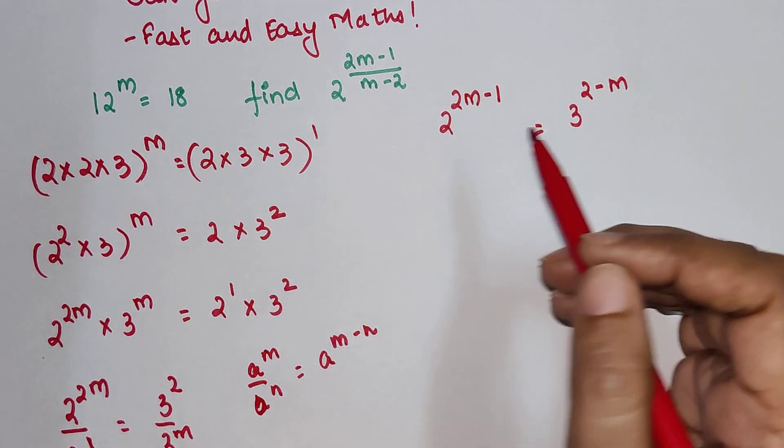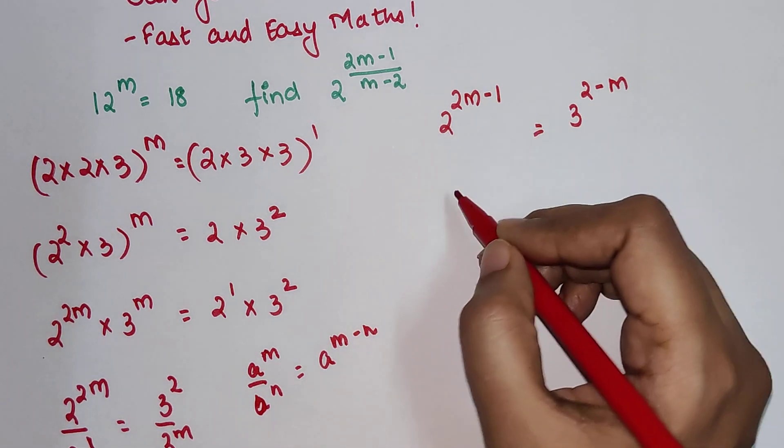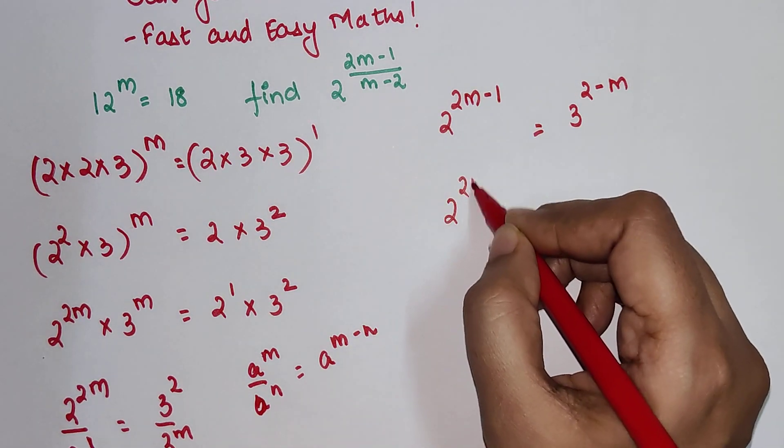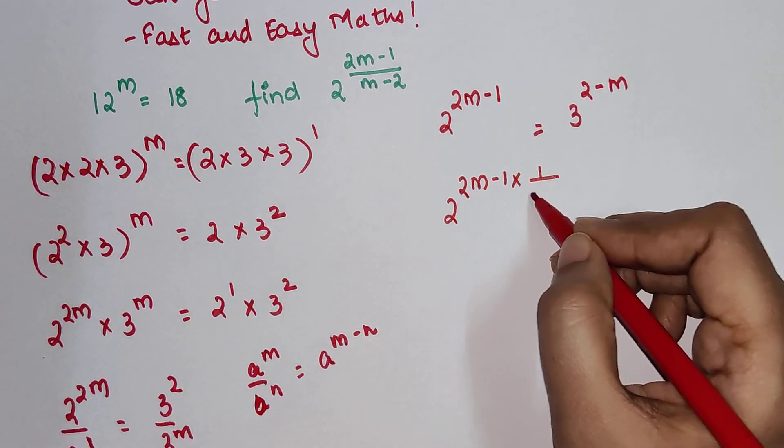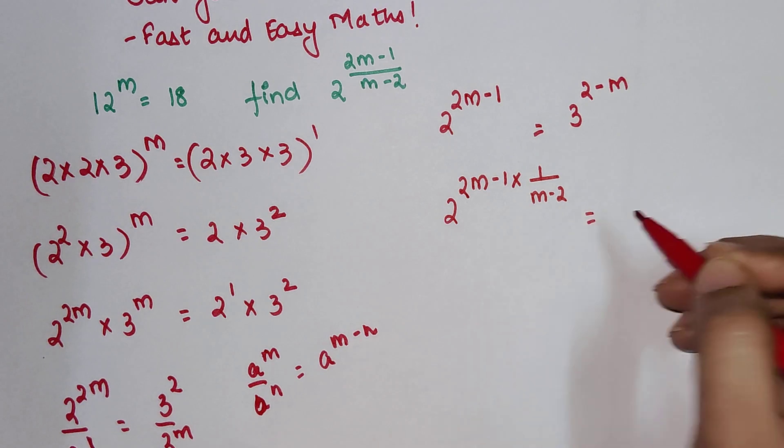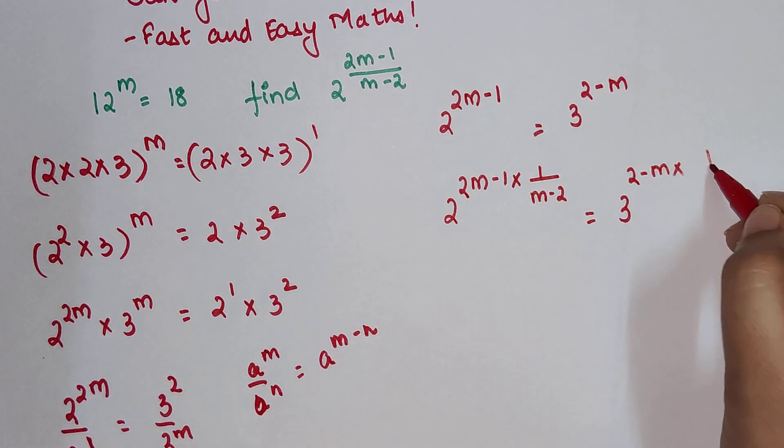In order to get the denominator, let's just multiply the indices by that particular value. So we will have 2 raised to (2m-1) times 1/(m-2) equals 3 raised to (2-m) times 1/(m-2).